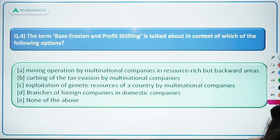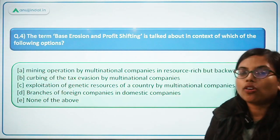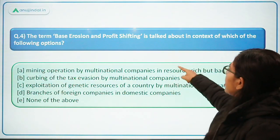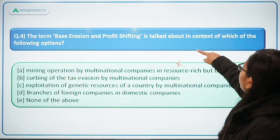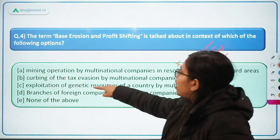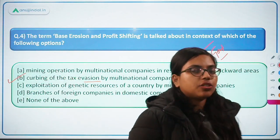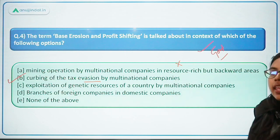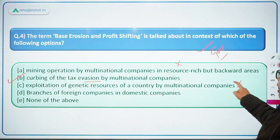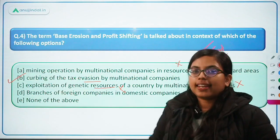Next question: the term base erosion and profit shifting is talked about in context of which of the following? Option one — mining operations by MNCs in resource-rich areas — absolutely wrong. This question appeared in a government examination. Option two — curbing of tax evasion by multinational companies — this is the correct answer. Base erosion and profit shifting refers to tax evasion by MNCs, whereby they make use of tax haven countries to evade taxes. The remaining options — exploitation of genetic resources and branches of foreign companies — are also wrong. So option B is the correct answer.